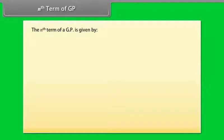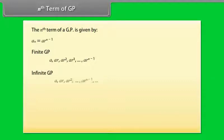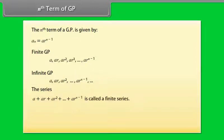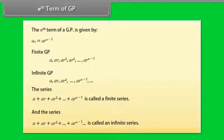The nth term of a GP is given by: Aₙ = A·R^(n−1). A finite GP gives a finite series: A + AR + AR² + ... + AR^(n−1). An infinite GP is the series A + AR + AR² + ... continuing without end.